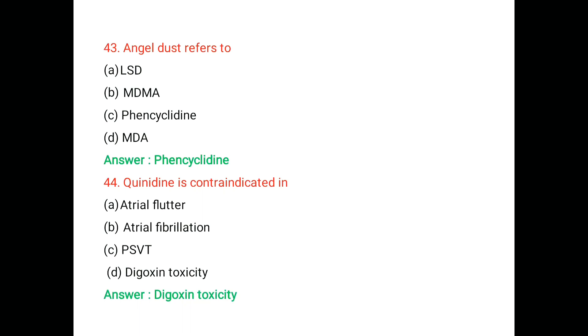Atrial flutter means rapid contraction of the upper chambers of the heart and lower chambers of the heart that leads to increase the heartbeat. Atrial fibrillation means rapid heart rate that leads to poor blood flow. PSVT means paroxysmal supraventricular tachycardia that leads to episodes of rapid heart rate.